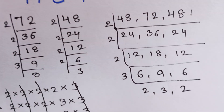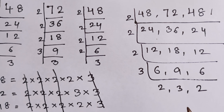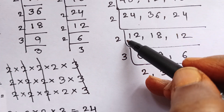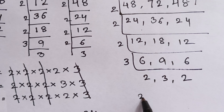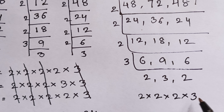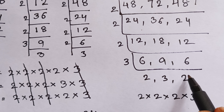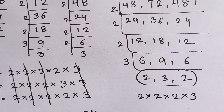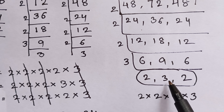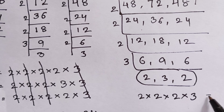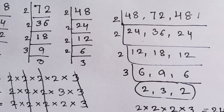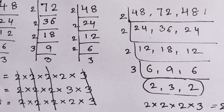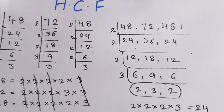We can write the factors as two, two, two, and three. These do not go into any further table. Even though these two digits go into the two times table, the three will not go further. So the highest common factor is two times two times two times three, which equals 24.